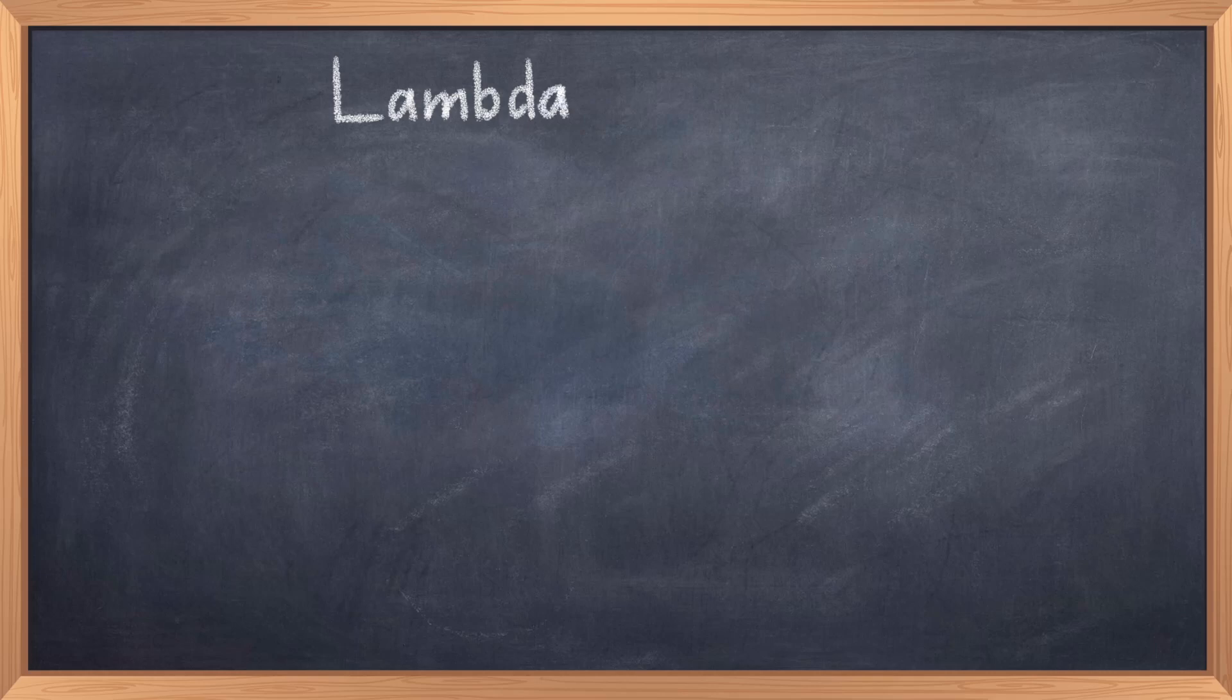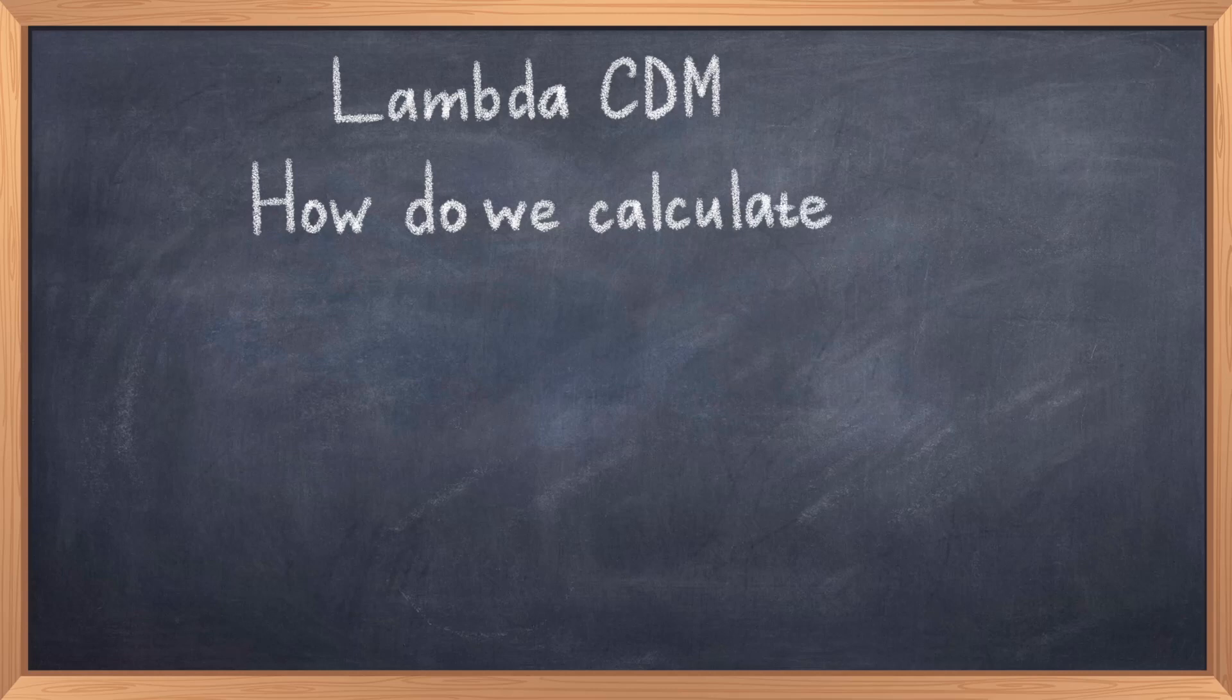In this video we will focus on calculating the age of the universe using the Lambda CDM model. Many people have probably heard some number for the age of the universe, but where does this number come from? How is this number calculated?